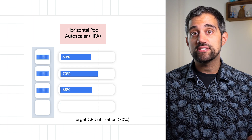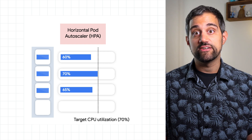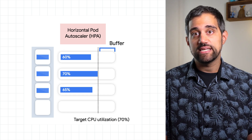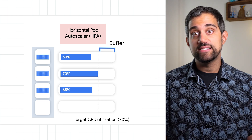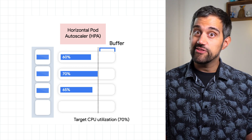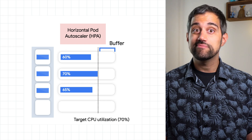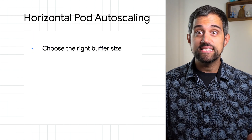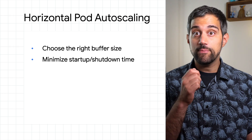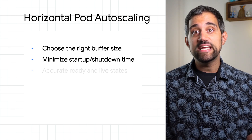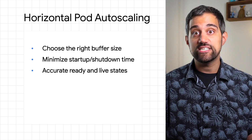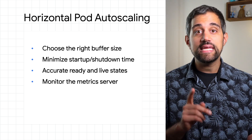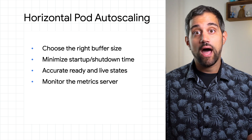When using a horizontal pod autoscaler, remember that there might be a lag time depending on how long it takes your container to start up. Setting the correct amount of available metric space, or buffer, requires knowing how well you can handle spikes in demand. If the buffer is too small and the pods take a long time to spin up, your app might get overloaded. On the other hand, too large of a buffer can lead to wasted resources and extra costs. A few things to keep in mind: understand what capacity might be needed for a spike and set your buffer accordingly; do what you can to have your pods spin up quickly and shut down efficiently; make sure to set up the right readiness and liveness probes so GKE can make the best decisions; and remember to make sure that your metric server is always up and running.